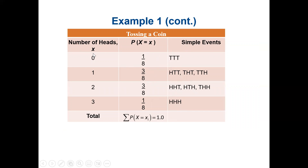The number of heads represents our random variable X. When X equals zero, we get TTT — only one outcome, so probability is one over eight. When X equals one, we can have HTT, THT, or TTH — three outcomes, so probability is three over eight. When X equals two, we have HHT, HTH, THH — also three outcomes, so probability is three over eight.